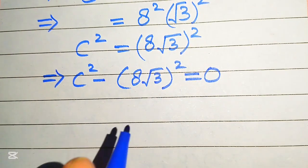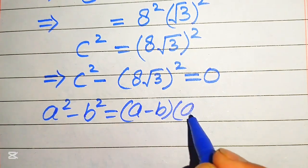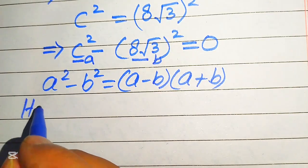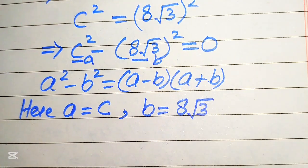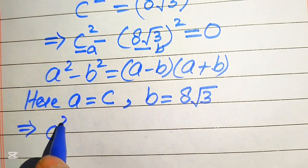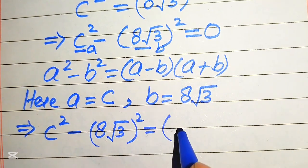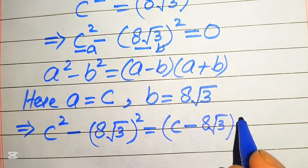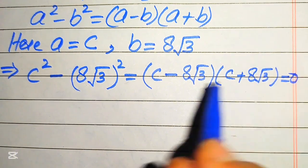Now we apply the algebraic identity: a squared minus b squared equals (a minus b)(a plus b). Here a equals c and b equals 8 times square root of 3. Substituting these values, c squared minus (8√3) squared equals (c minus 8√3)(c plus 8√3), and this whole expression equals 0.